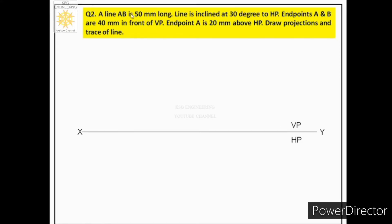The third step is to pick the end of the line about which maximum data is given. Endpoints A and B are 40 mm in front of VP, meaning the distance of both points from VP is given. Then endpoint A is 20 mm above HP, so the distance of only endpoint A from HP is given. Maximum data about A is given, so we will pick endpoint A first.